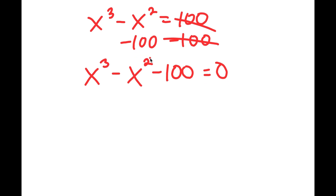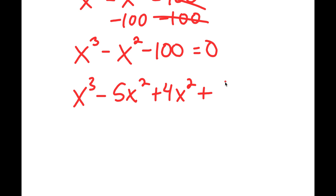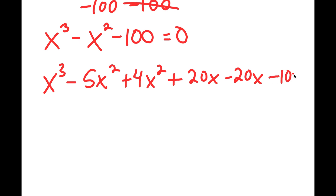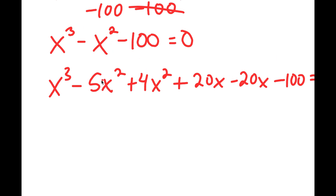From here, I'm going to rewrite negative x squared as negative 5x squared plus 4x squared, and then write 20x minus 20x, and then minus 100 equals 0. The reason I did this is because 5 times 4 is equal to 20, and we want to make this factorable. We need two terms that, when added, make negative 1, and when multiplied, make 20.